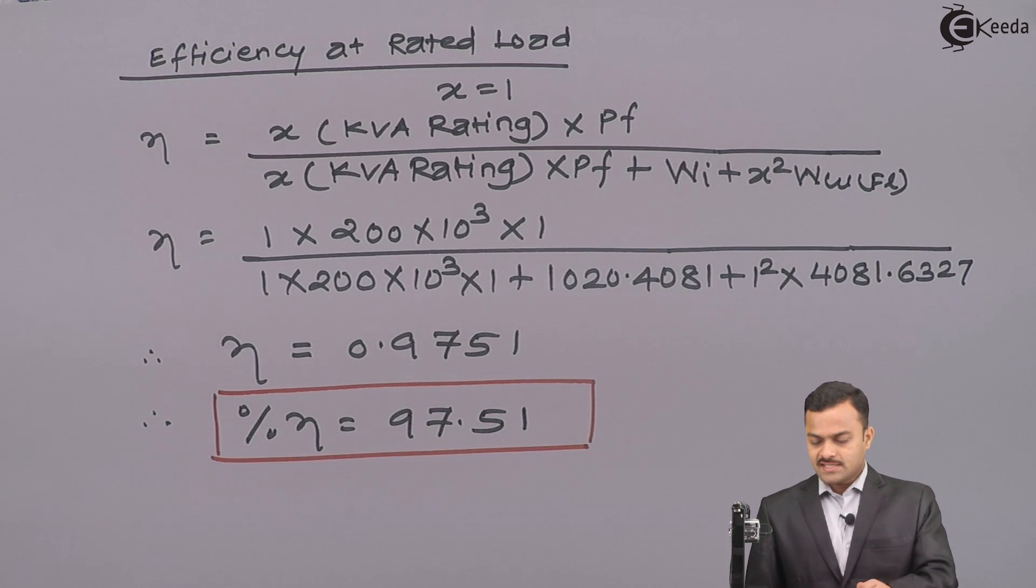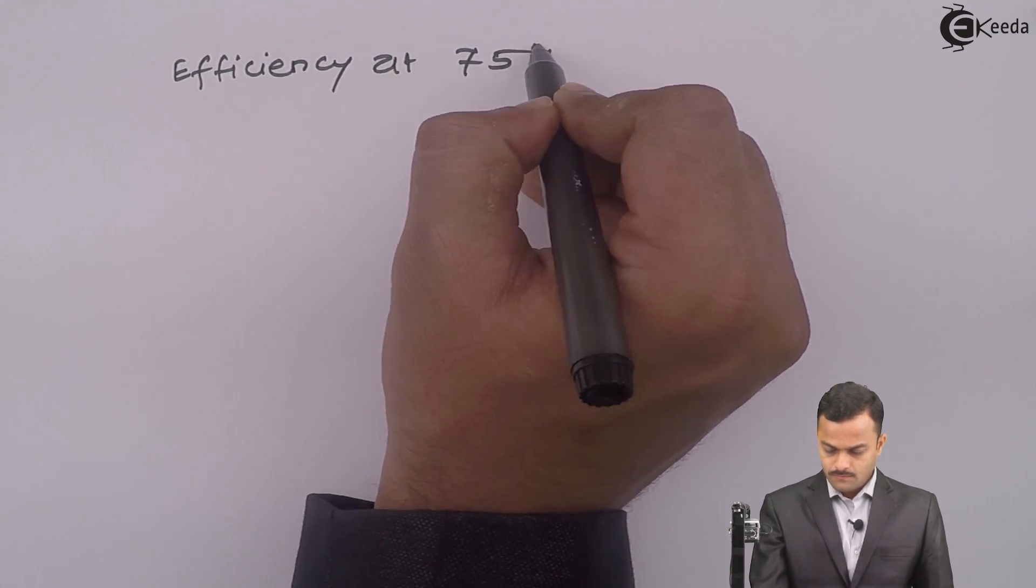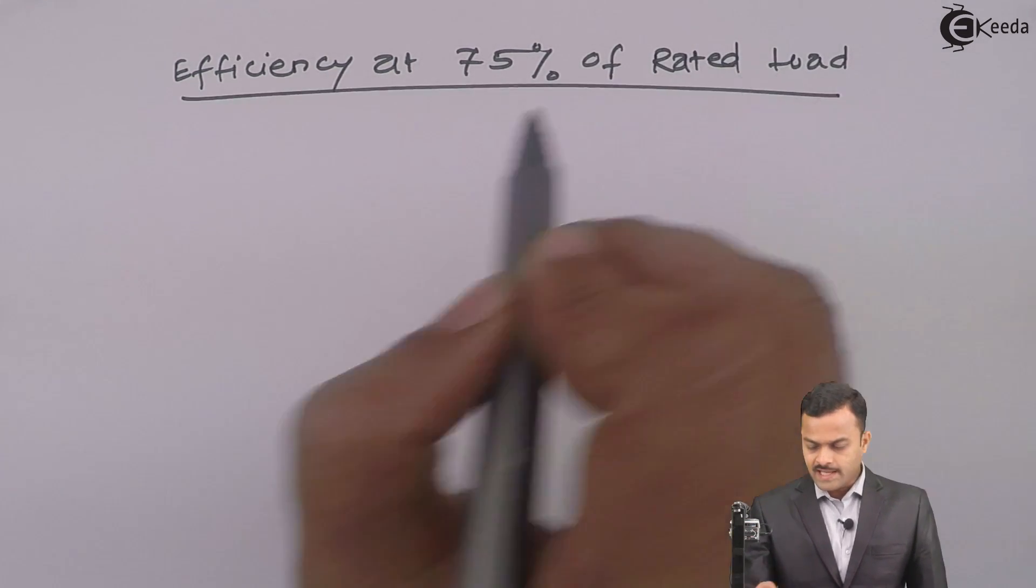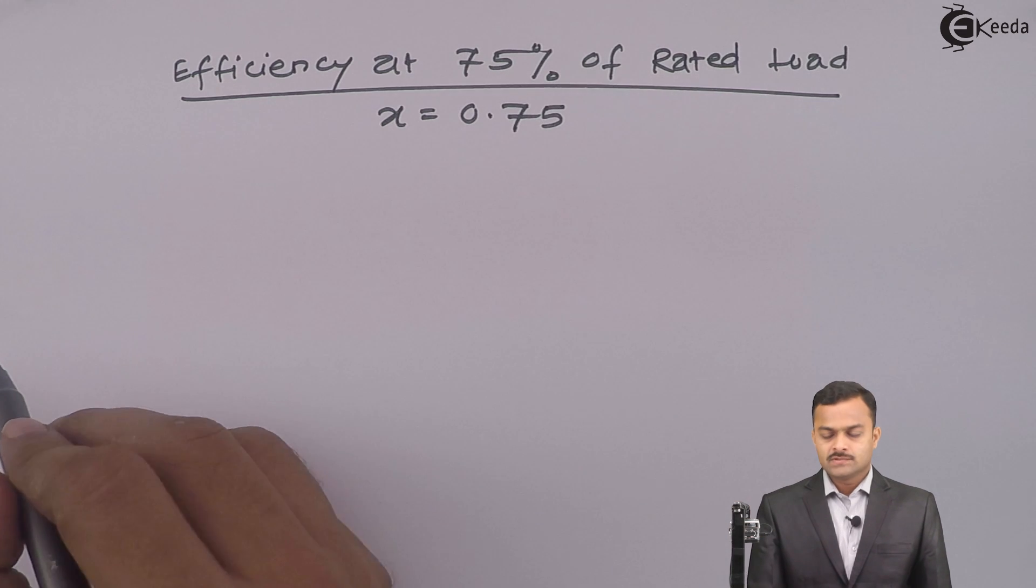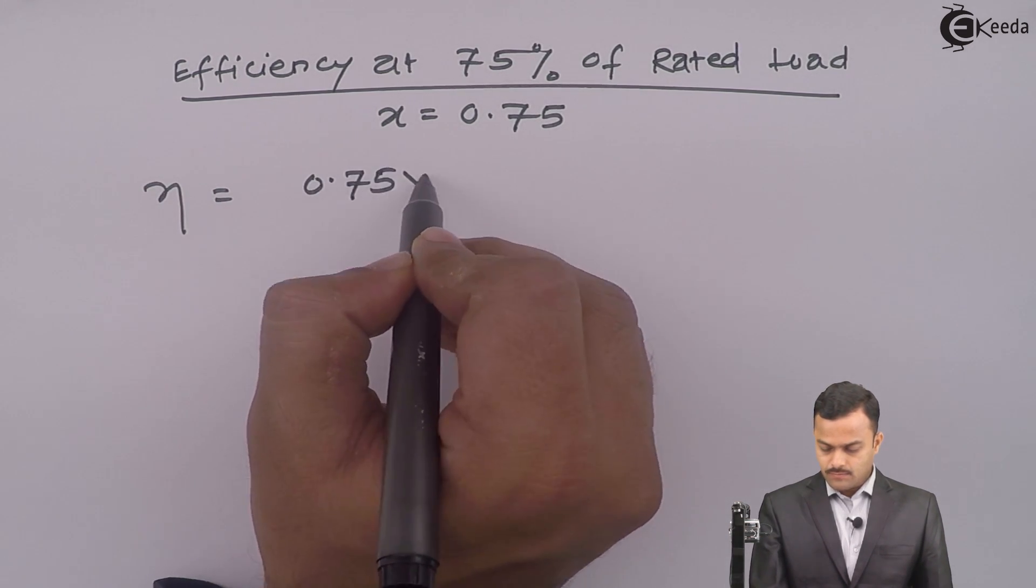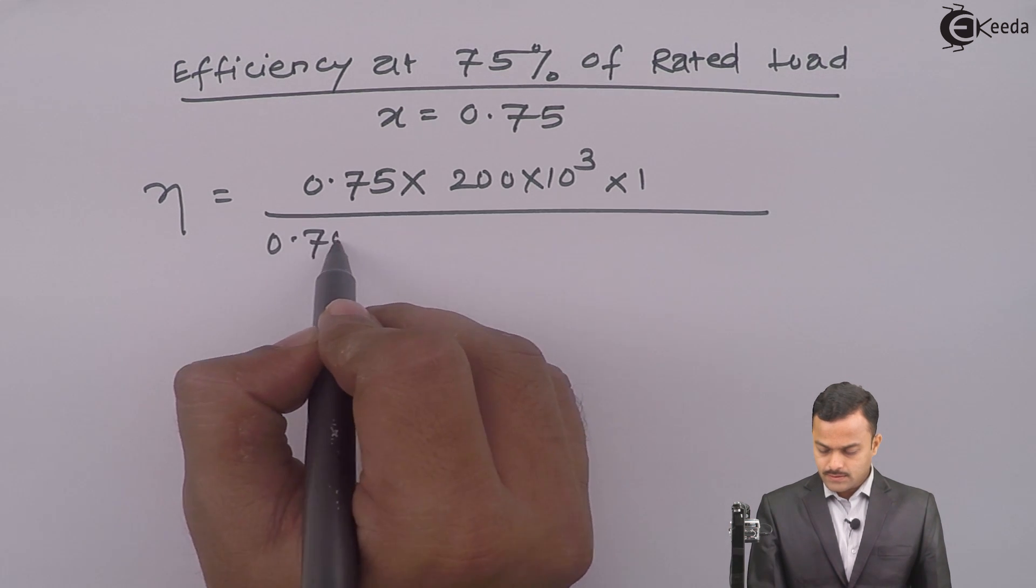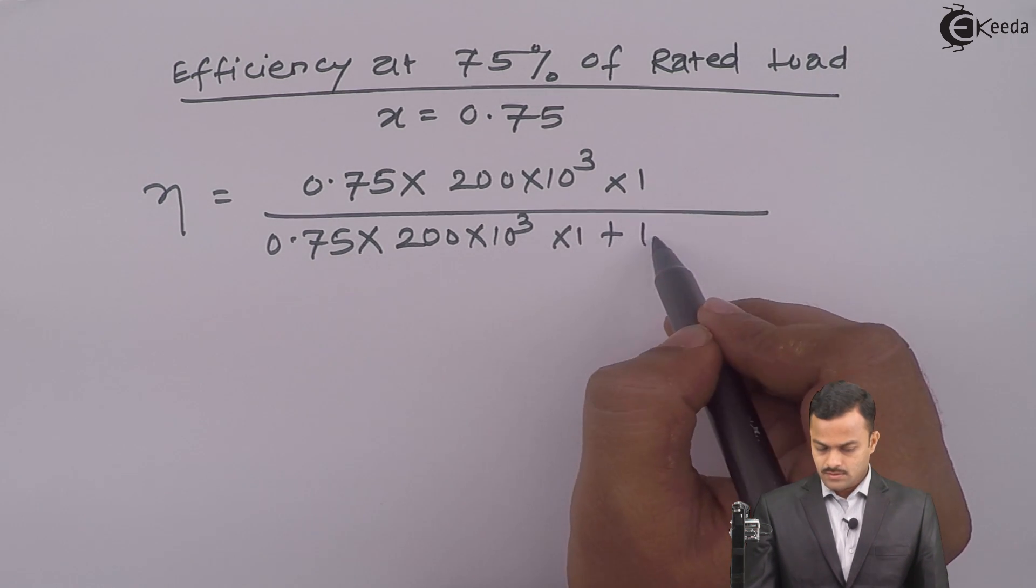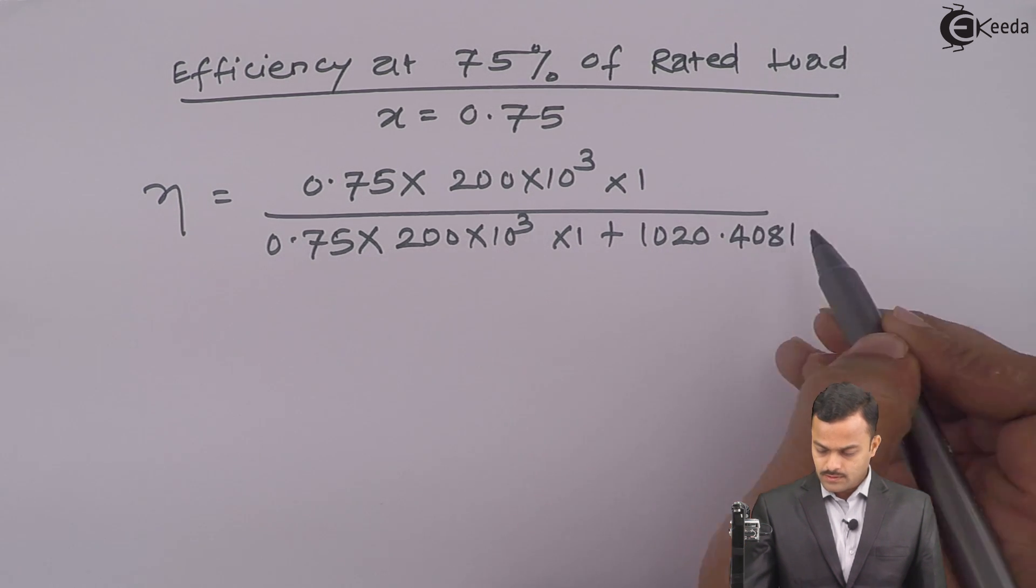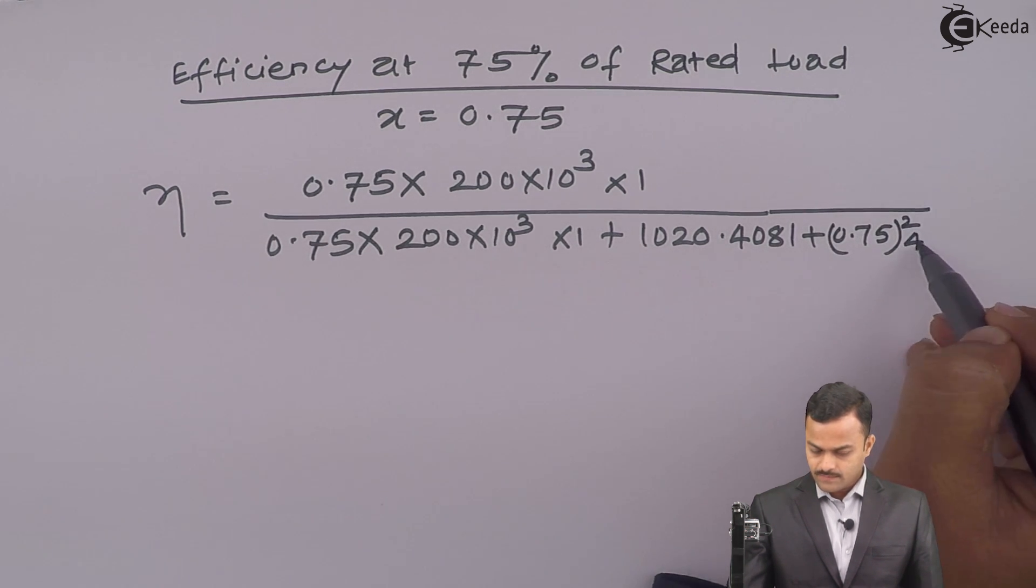Let us calculate the efficiency at 75% of the rated load. So, same formula you have to use except one change: X will be 0.75. So I will get efficiency X multiplied by KVA multiplied by power factor upon X into KVA into power factor, ion loss is 1020.4081, X square is 0.75 square and WCUFL is 4081.6327.